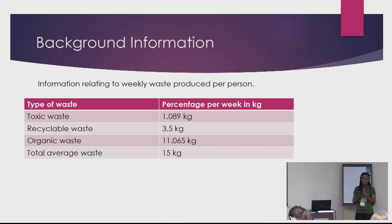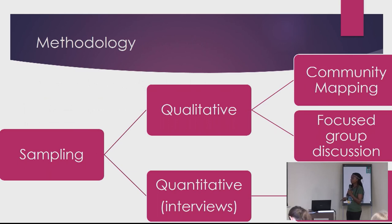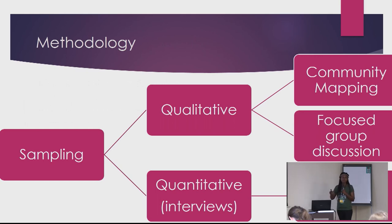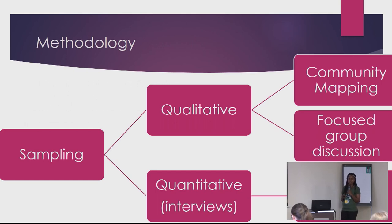But the question was: where does this waste go and how is it disposed? To get these results, we did a random sampling. Qualitatively, we used community mapping and focus group discussions — taking groups of no more than 15 people to discuss waste management in their areas. Then we had quantitative interviews with statistical analysis of data.